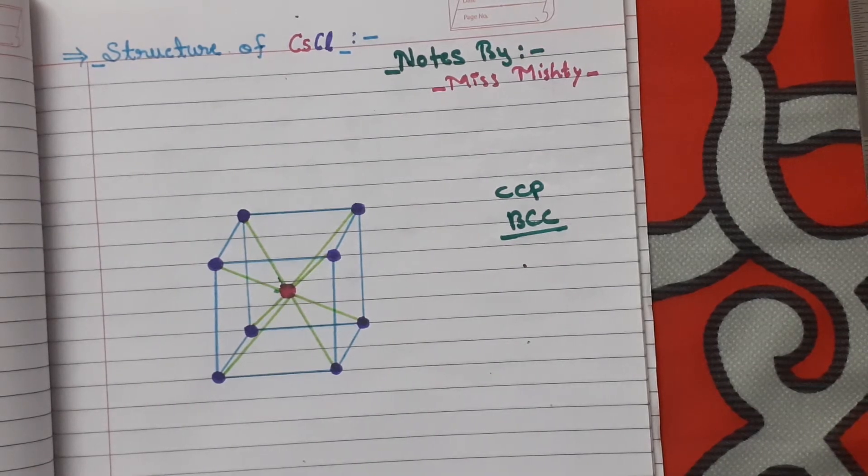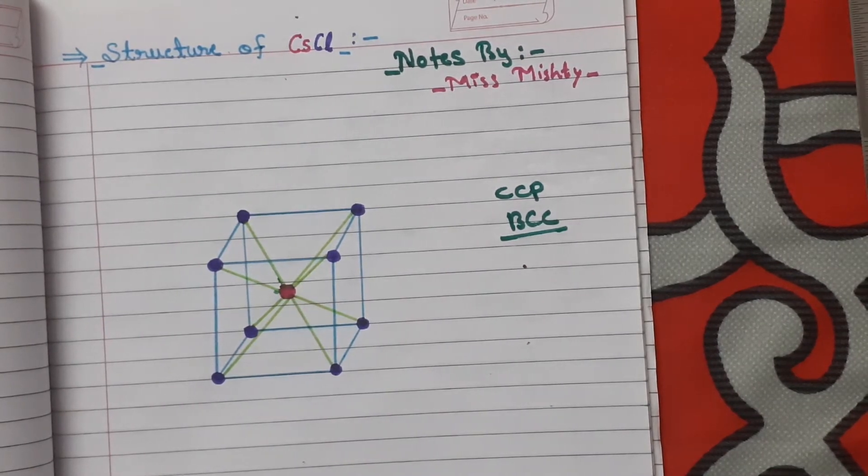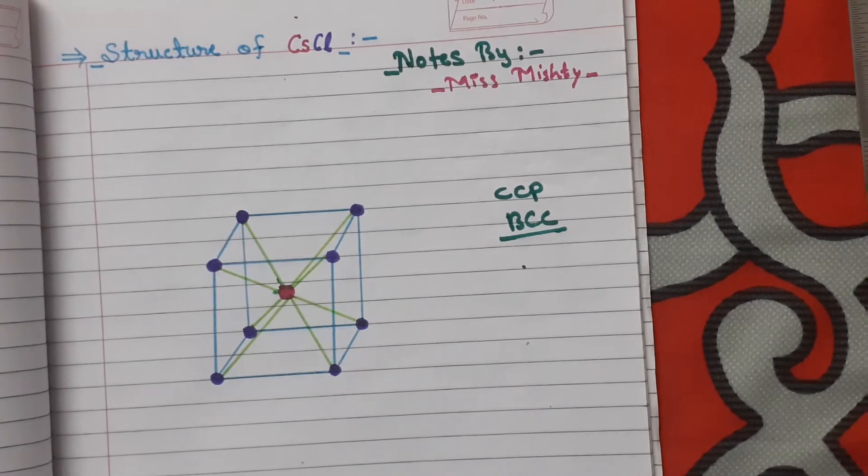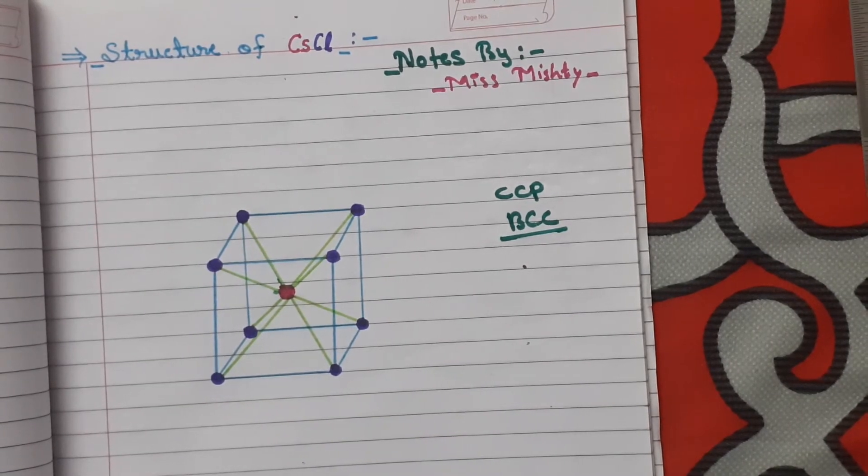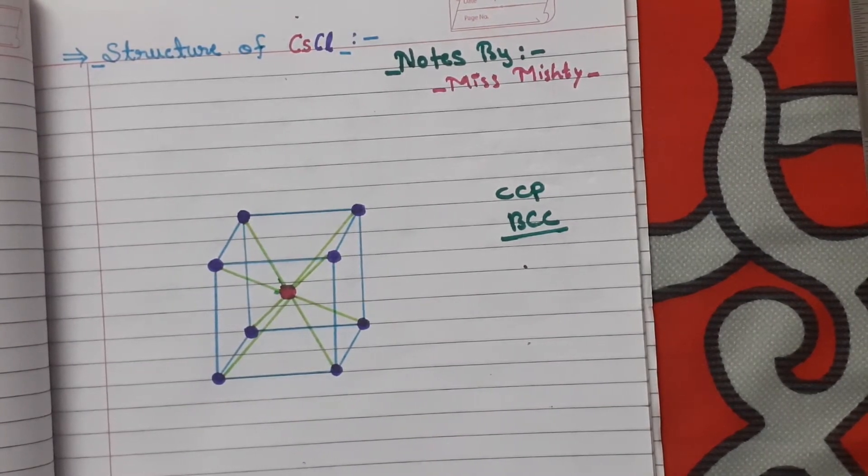So here there is a question: which of the ions from cesium and chlorine will occupy the corners and which of the ions is occupying the body center?